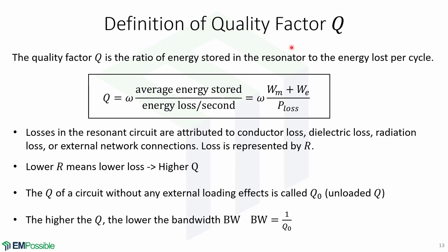Now let's define the quality factor Q. Q is the ratio of energy stored in the resonator to the energy lost per cycle, given by Q equals omega times the average energy stored over the energy loss per second, equal to omega times (W_m plus W_e) over P_loss. Losses in the resonant circuit are attributed to conductor loss, dielectric loss, radiation loss, or external network connections, represented by R. Lower R means lower loss and higher Q. The Q without external loading effects is called Q_0 or unloaded Q, and a higher Q leads to a lower bandwidth BW.